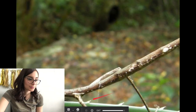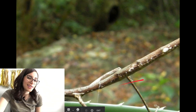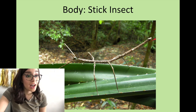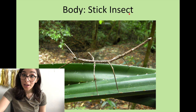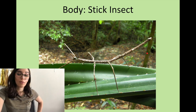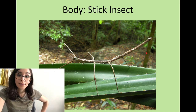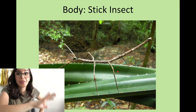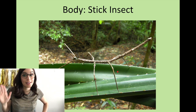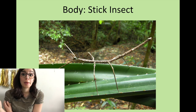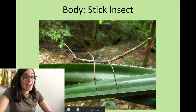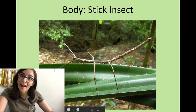What do you guys think this is? Kind of looks like a stick, right? That was the body of a stick insect. This is a bug, you guys, and it looks just like a stick. Why do you think it looks like a stick? To blend in — to camouflage with its surroundings so it can stay safe from predators. Predators are animals that might want to eat it, so because it has a stick-like body, it can hide easily.